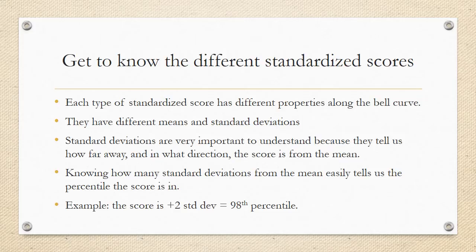Let's get to know the different standardized scores. Each type of standardized score has different properties along the bell curve. They have different means and different standard deviations. Standard deviations, as I've said many times already, are very important to understand, because they tell us how far away and in what direction the score is from the mean. Knowing how many standard deviations from the mean easily tells us the percentile the score is in. So, for example, if the score is plus 2 standard deviations away from the mean, we know that this score is in the 98th percentile.